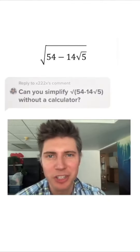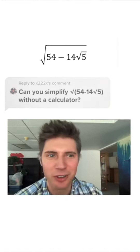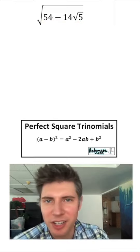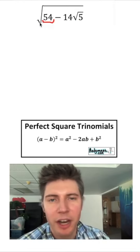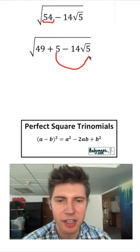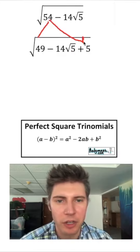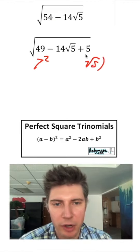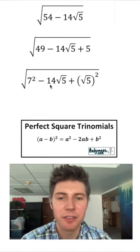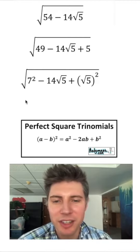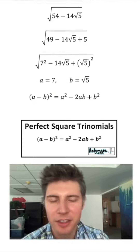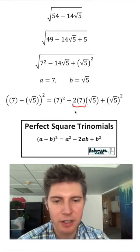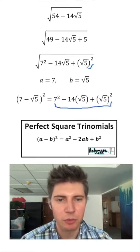Can you solve the square root of (54 minus 14 root 5) without a calculator? Hidden in here is a perfect square trinomial. We're going to use the notes for perfect square trinomials. To set up, I'll break 54 into 49 plus 5, then move the 5 over. Next, I'll rewrite 49 as 7 squared and 5 as root 5 squared. Now with the perfect square trinomial formula, we can see that a equals 7 and b equals root 5. Plugging in 7 for a and root 5 for b, the 2 and 7 combine, and we can see that what's inside here matches the formula.